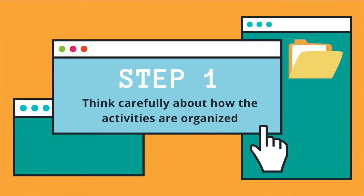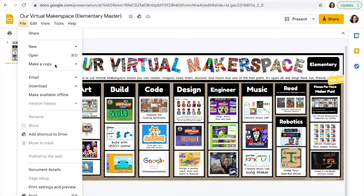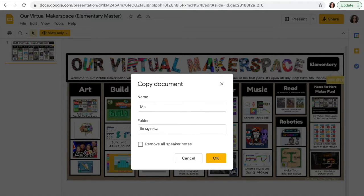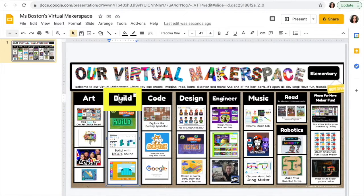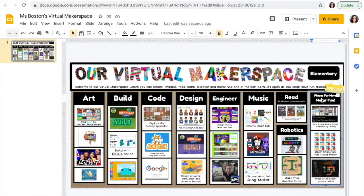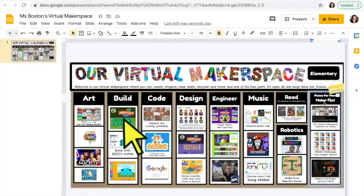Step one: think carefully about how the activities are organized. It's great if the makerspace is inviting, but more importantly it has to be easy to understand. In Shannon's example, she organizes all projects and activities by subject. This makes a lot of sense because most kids organize their school day by subject. If the virtual makerspace is laid out that way, students won't waste time figuring out the format — they'll go straight to what they're interested in.